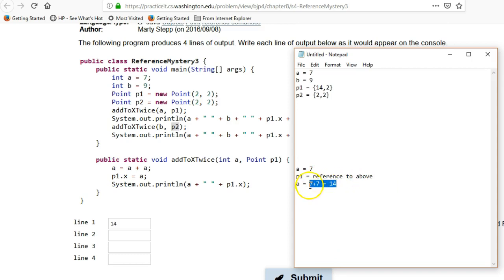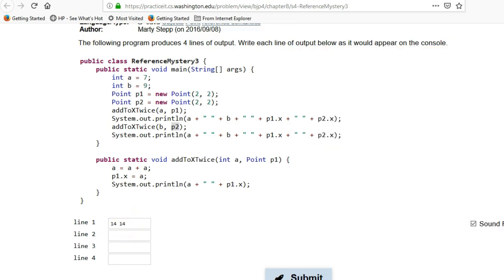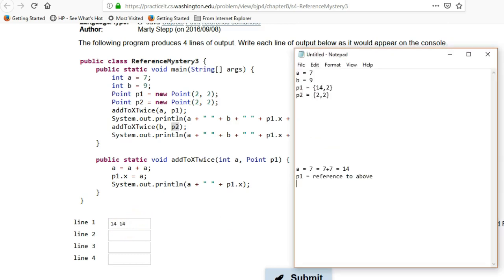And actually, let me, to be clear, let me put this up here, because it's really referring to that value here and not this value here. This is a in a different stack frame. So it's using the a here and storing that into p1.x. So that's gonna be another 14.